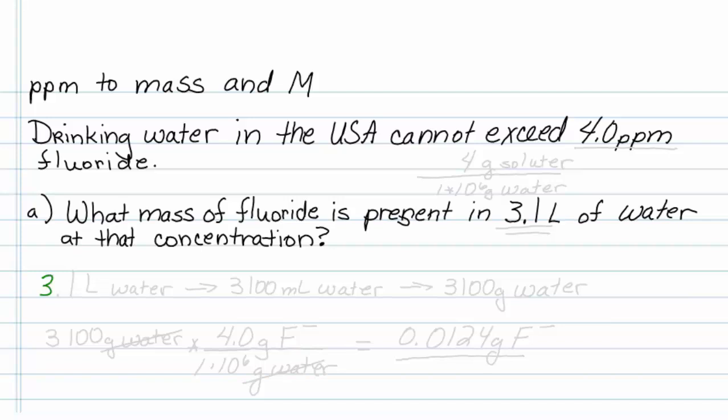First assumption is 3.1 liters of water we know is 3,100 milliliters of water, and the density of water is 1 gram per milliliter, so that puts us at 3,100 grams of water. So that's our given. I'm going to write that down.